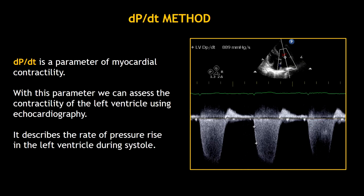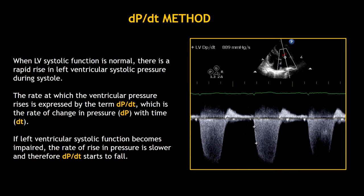Let's start with the definition. What is DPDT? DPDT method is a parameter of myocardial contractility. With this parameter, we can assess the contractility of the left ventricle using echocardiography. This parameter describes the rate of pressure rise in the left ventricle during systole. When the left ventricular systolic function is normal, there is a rapid rise in left ventricular systolic pressure during systole. The rate at which the ventricular pressure rises is expressed by the term DPDT, which is the rate of change in pressure with time.